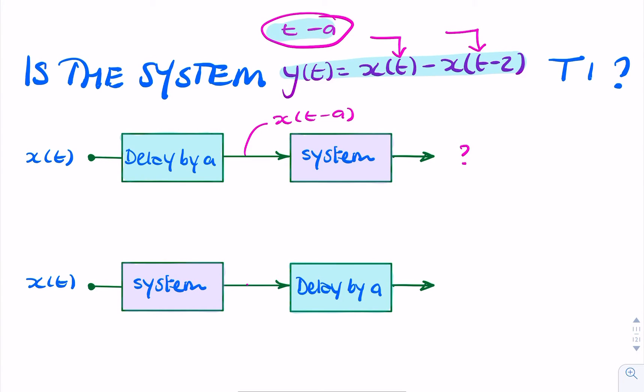So we replace t with t minus a. So what we have is x of t minus a minus x of t minus a minus 2. Remember, I'm replacing t with t minus a.